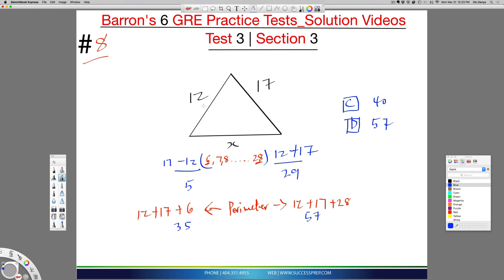You have to use this rule to figure out the third side. Perimeter means the sum of all sides. We calculated 12 plus 17 plus the smallest value and 12 plus 17 plus the largest value to give a range of 35 to 57. You pick the answers that meet that criteria. The answer is C and D.